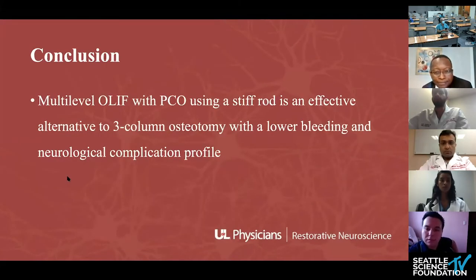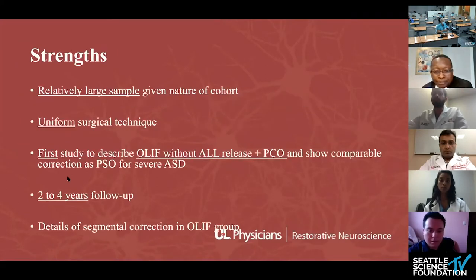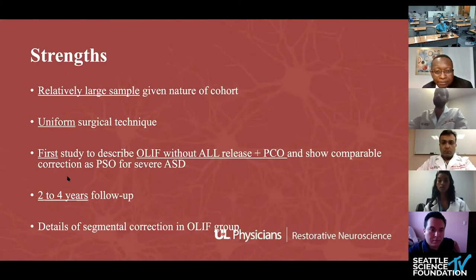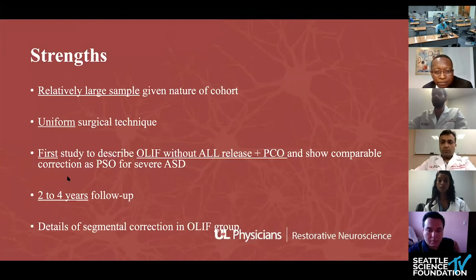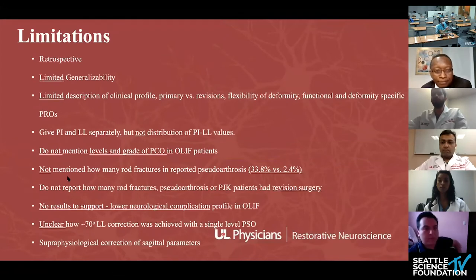In conclusion, the authors state that multilevel OLIF with PCO using a stiff rod is an effective alternative to 3-column osteotomy with a lower bleeding and neurological complication profile. Strengths include a relatively large sample given the population — over 65 years with severe spinal deformity — uniform surgical technique with a single surgeon, and this is one of the first studies to show OLIF without ALL release combined with PCO (a hybrid but not ACR) demonstrating correction comparable to PSO for severe adult spinal deformity. Follow-up was good at two to four years.